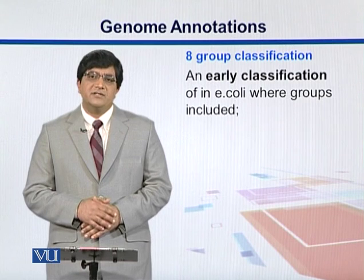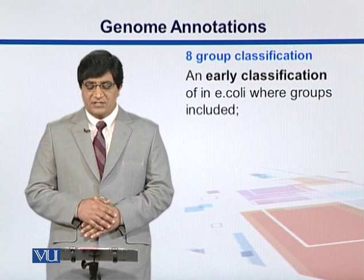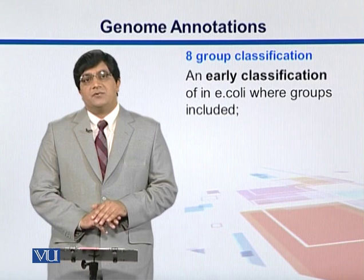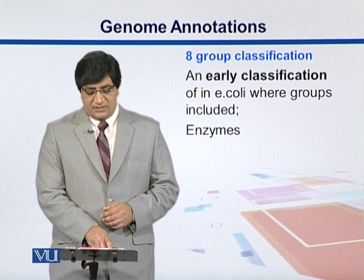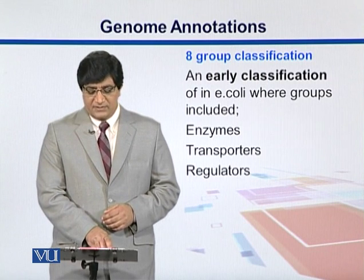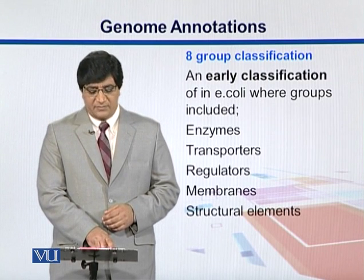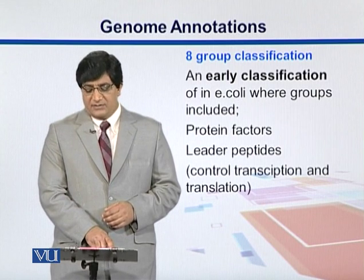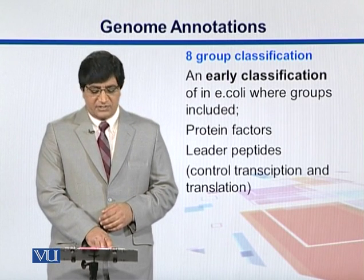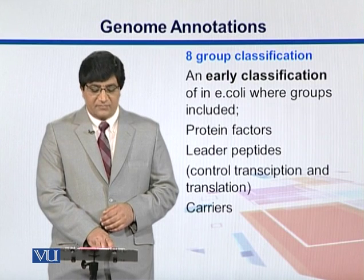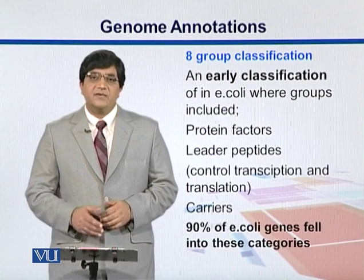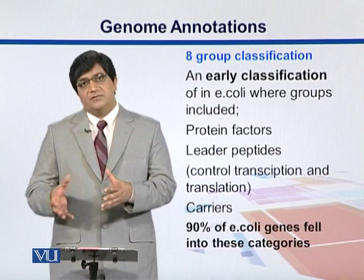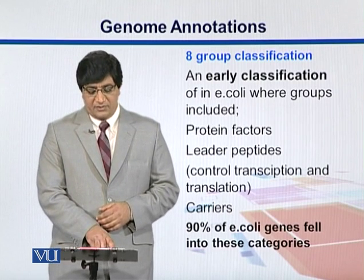There are different classification schemes for functional classification. One of them is an eight-group classification, which classifies genes and their products into one of these groups: enzymes, transporters, regulators, membranes, structural elements, protein factors, leader peptides — which control transcription and translation — and carriers. Scientists have found that 90% of E. coli genes fit into these categories, so their annotations can be explained.